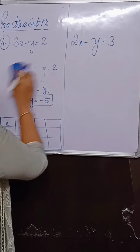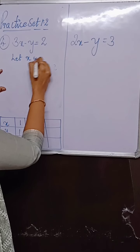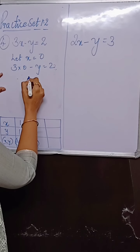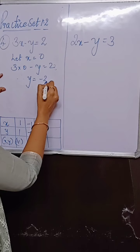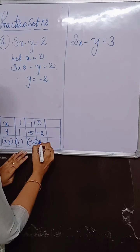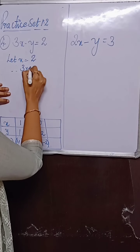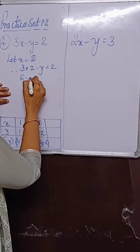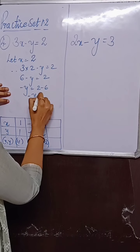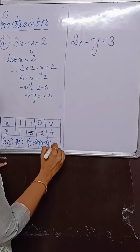Next, let us take x as 0. So 3 into 0 minus y is equal to 2, therefore y is minus 2. When x is 0, y is minus 2, so the ordered pair is 0 comma minus 2. Then I will take x as 2. So 3 into 2 minus y equals 2, giving 6 minus y equals 2, so minus y equals 2 minus 6, minus y equals minus 4, therefore y equals 4. Ordered pair: 2 comma 4.